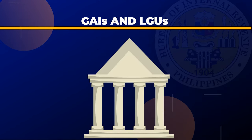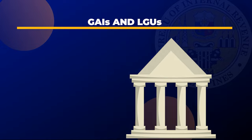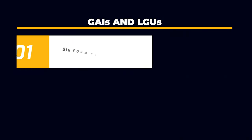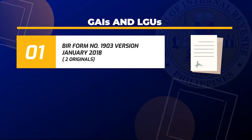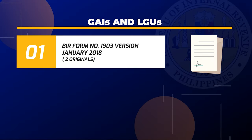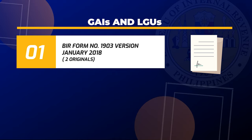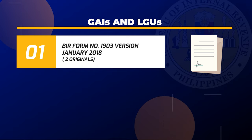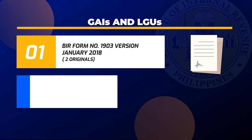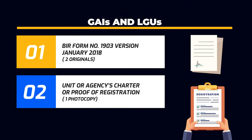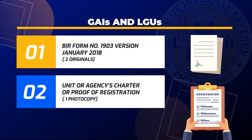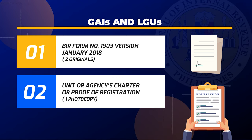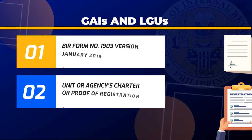For GAIs and LGUs: BIR Form No. 1903, version January 2018, two original copies; and unit or agency's charter or proof of registration, one photocopy.